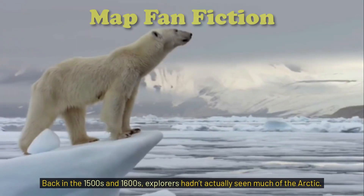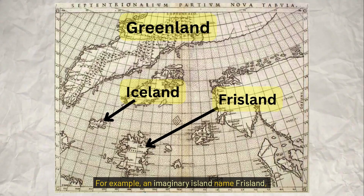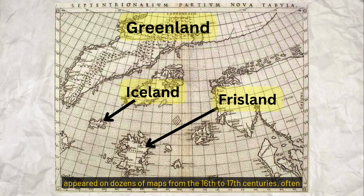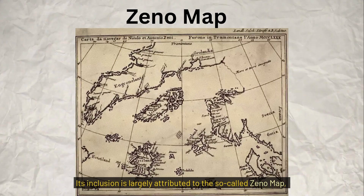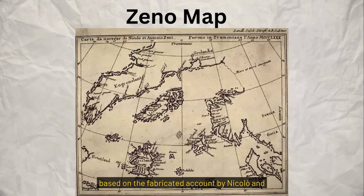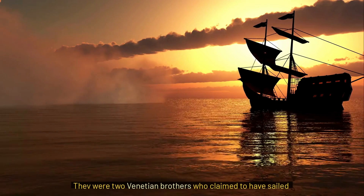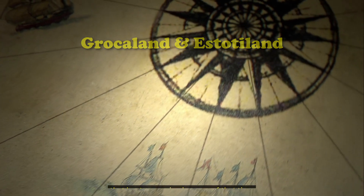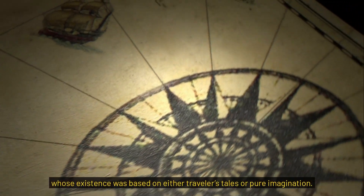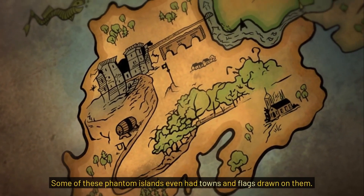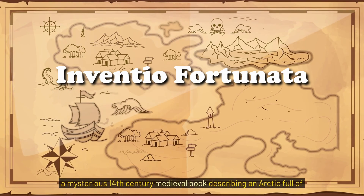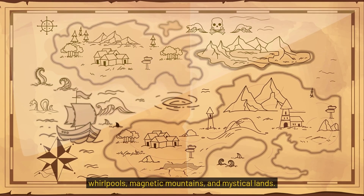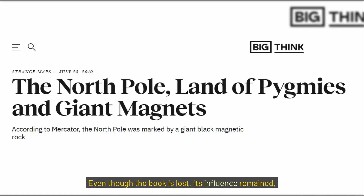Back in the 1500s and 1600s, explorers hadn't seen much of the Arctic, so they filled in the blanks with imagination. An imaginary island named Frisland appeared on dozens of maps from the 16th to 17th centuries, often just south of Greenland. Its inclusion is largely attributed to the so-called Zeno map, based on a fabricated account by Niccolò and Antonio Zeno in 1558 — two Venetian brothers who claimed to have sailed the North Atlantic. Grocland and Estotiland were two other famous phantom islands that kept appearing, based on travelers' tales or pure imagination. Some phantom islands even had towns and flags drawn on them — it was map fan fiction. Then there was Inventio Fortunata, a mysterious 14th-century medieval book describing an Arctic full of whirlpools, magnetic mountains, and mystical lands. Even though the book is lost, its influence remained.